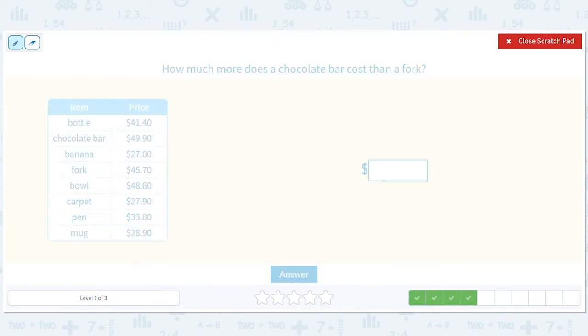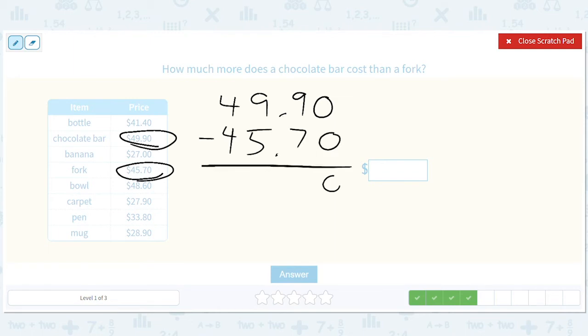How much more does a chocolate bar cost than a fork? This is a very expensive chocolate bar and this is a very expensive fork. So how much more? Well, that sounds like a subtraction problem. $49.90 minus $45.70. This will be $2, this will be $4, and we're going to end up with $4.20 more. I still say you go for the chocolate bar.